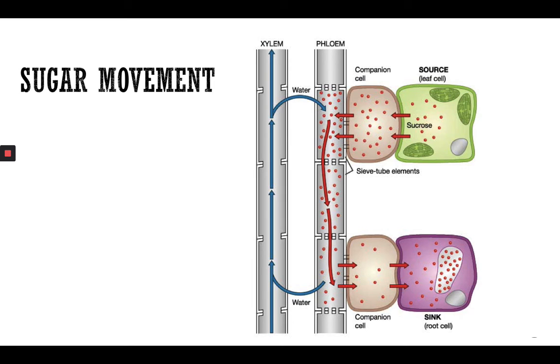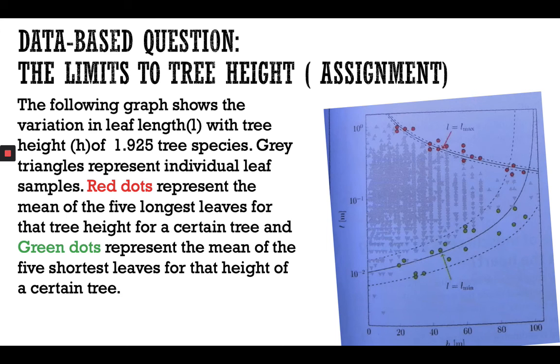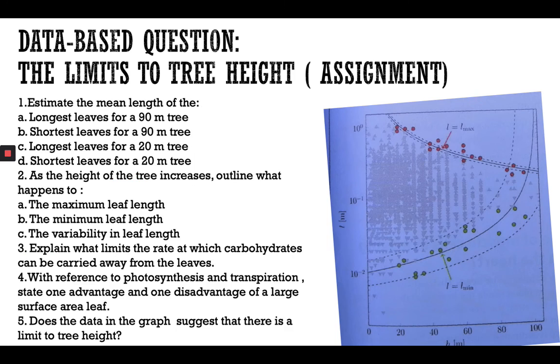We have a database question which is your assignment. Here we have a graph. The following graph shows the variation in leaf length with tree height of 1,925 tree species. Grey triangles represent individual leaf samples. Red dots represent the mean of the five longest leaves for that tree height for a certain tree, and green dots represent the mean of the five shortest leaves for that height of a certain tree. Now you're going to answer those questions: estimate the mean length of leaves as the height of the tree increases, outline what happens, and explain what limits the rate at which carbohydrates can be carried away from the leaves.